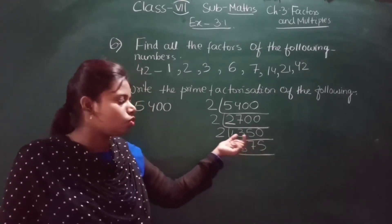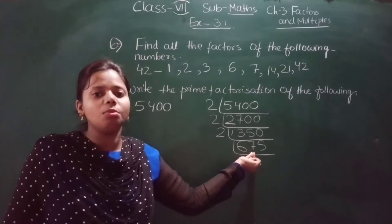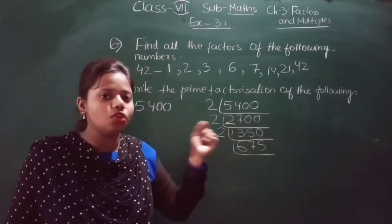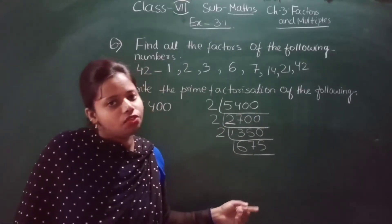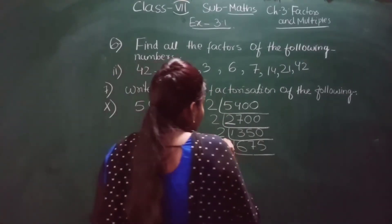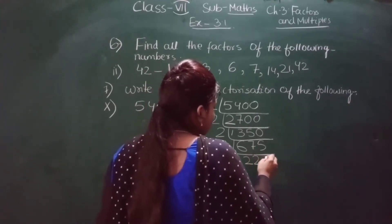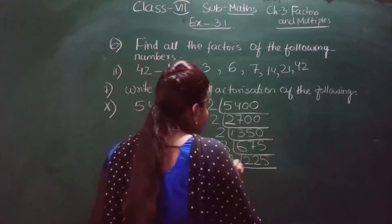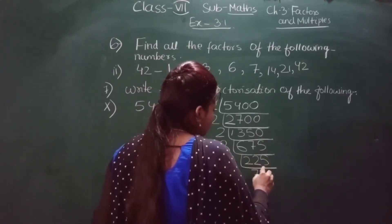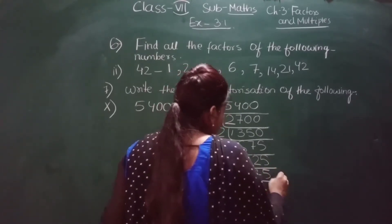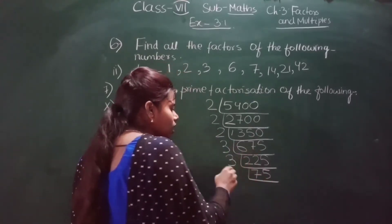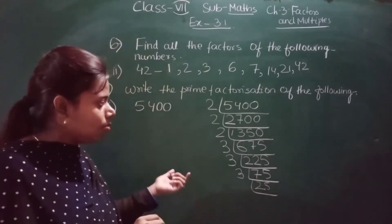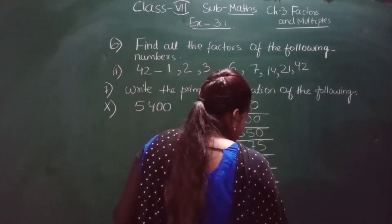So 675 ÷ 3 = 225. Check again: 2 + 2 + 5 = 9, divisible by 3. So 225 ÷ 3 = 75. Again: 7 + 5 = 12, divisible by 3. So 75 ÷ 3 = 25. Now 25 does not come in the 3 times table, but it comes directly in the 5 times table. 25 ÷ 5 = 5, and 5 ÷ 5 = 1. Done.